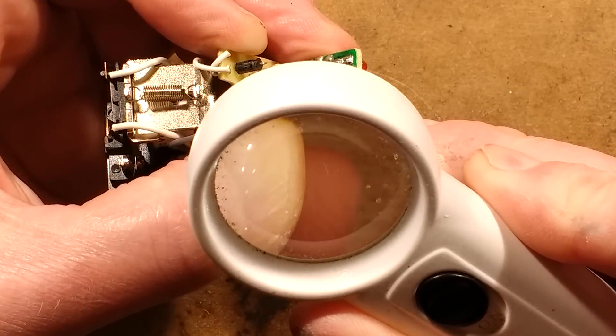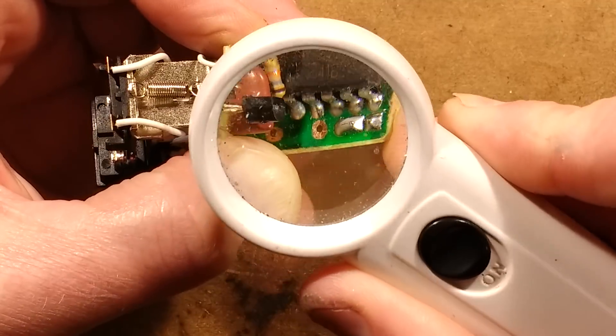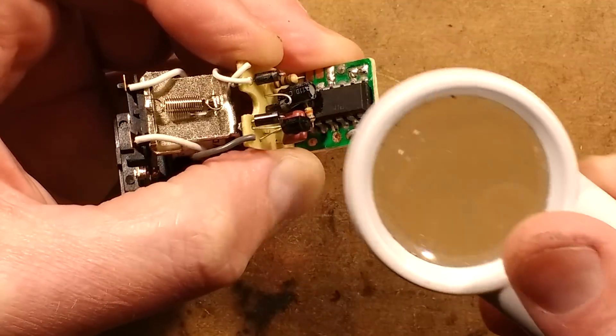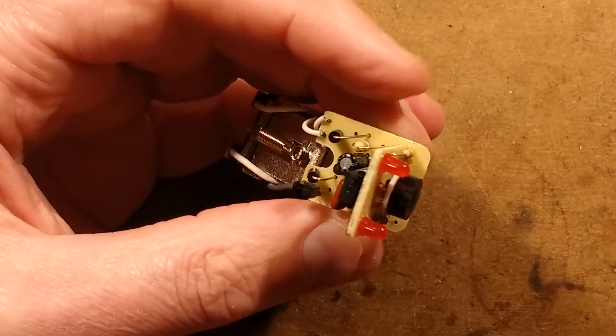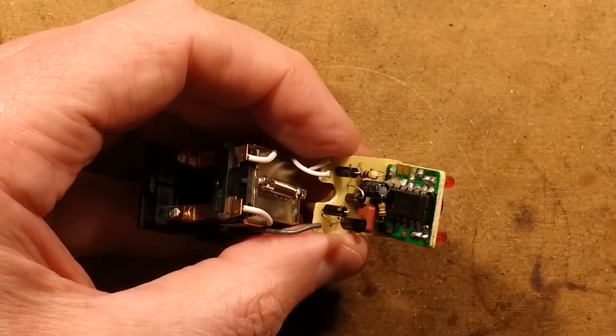It's a CD4541B. Not sure if you can actually see that. Can you see that? Right, so that is a pretty standard CMOS chip. I'm not sure exactly what that does. Right, tell you what then. I'm going to pause momentarily and reverse engineer this.